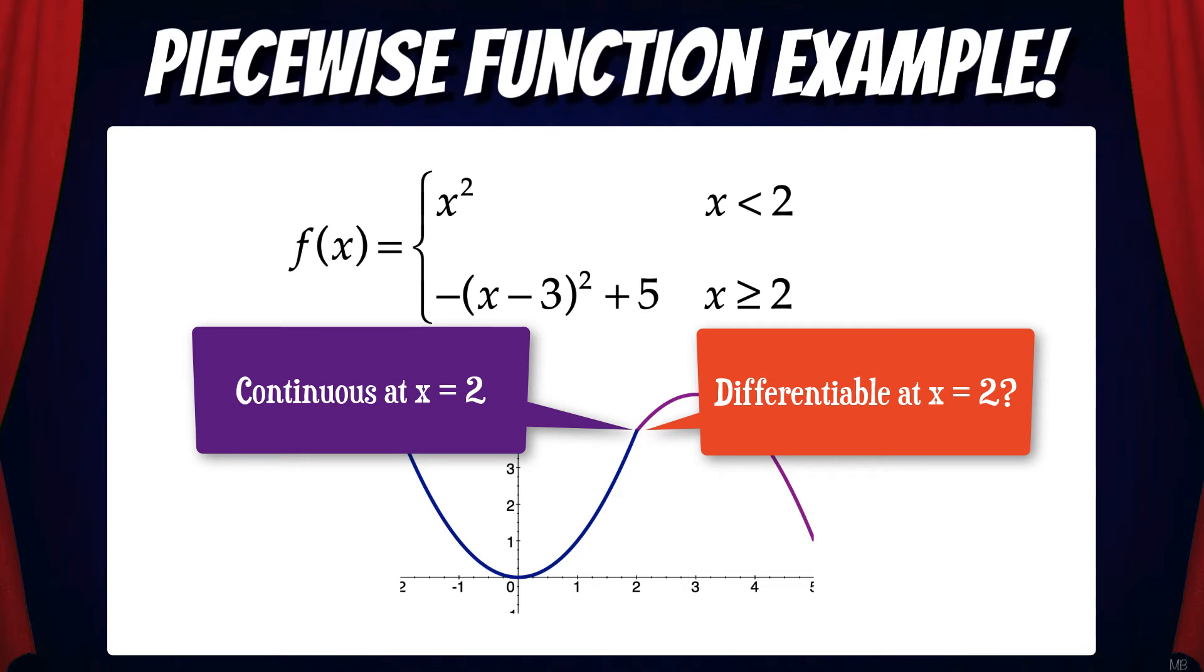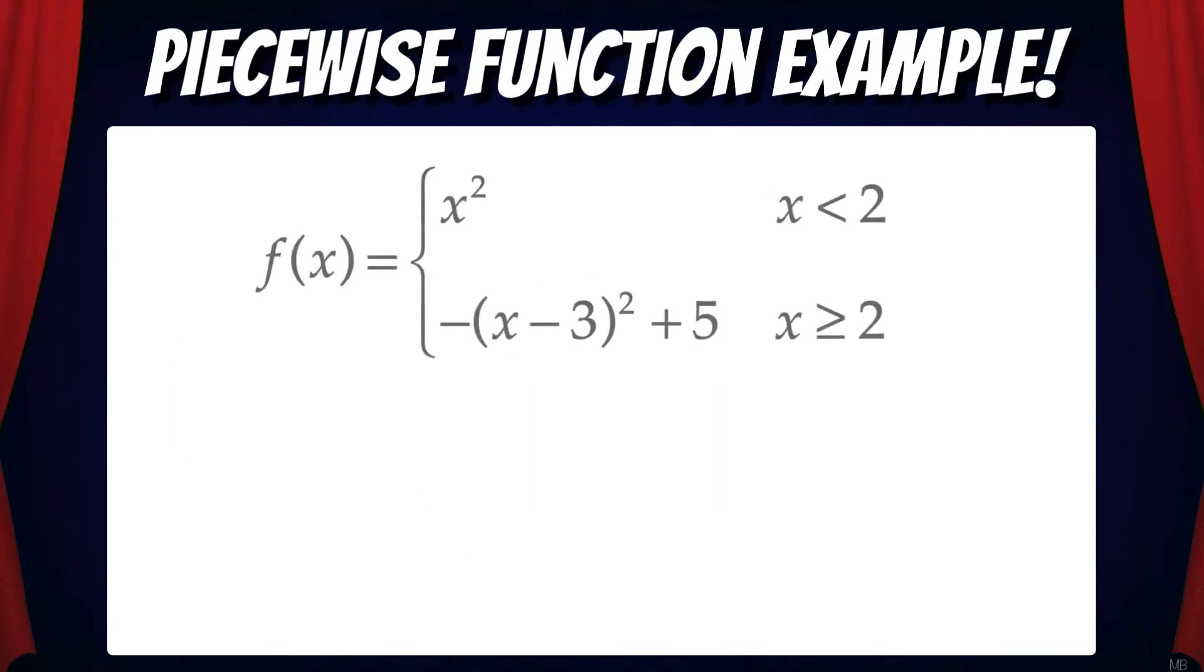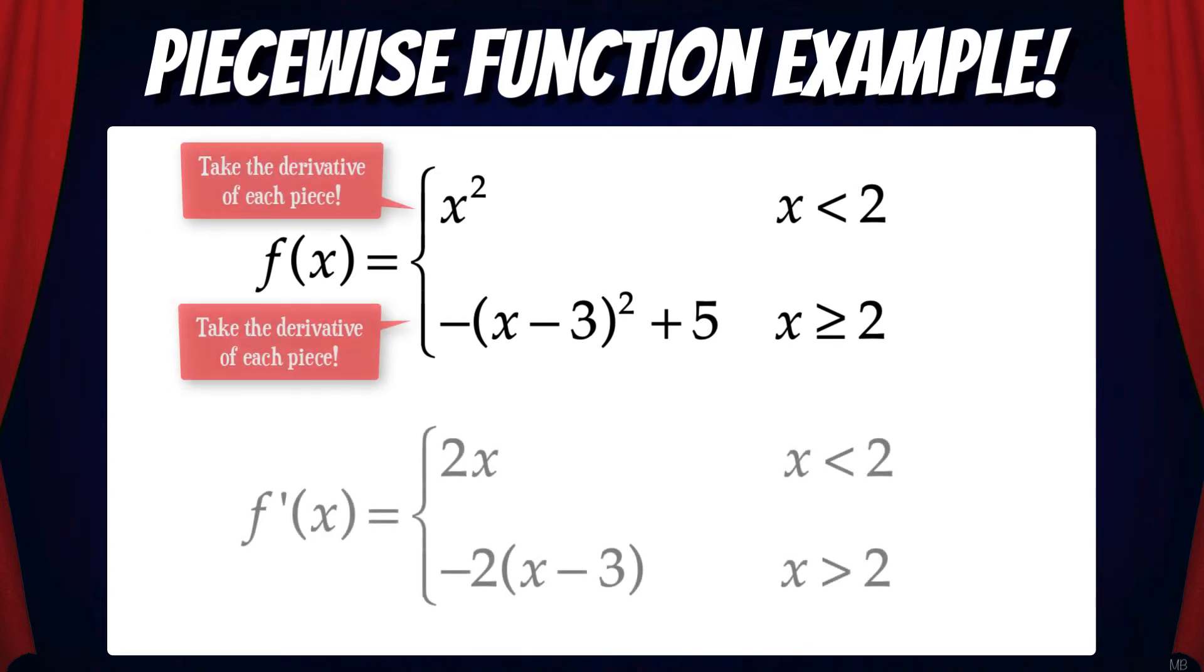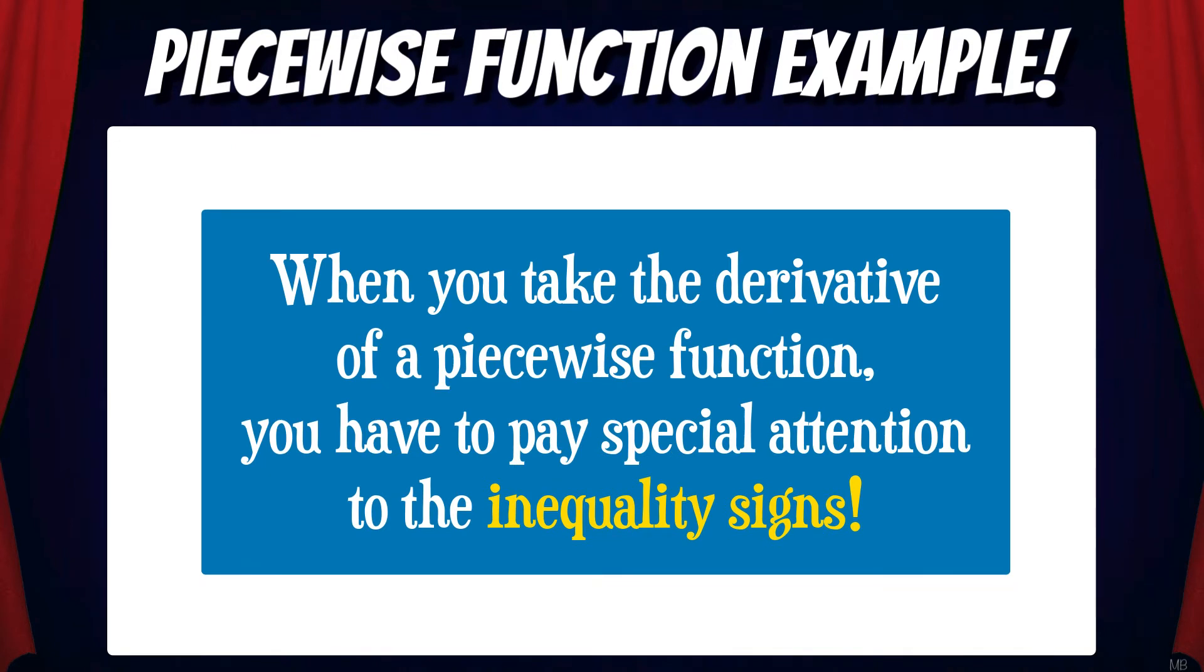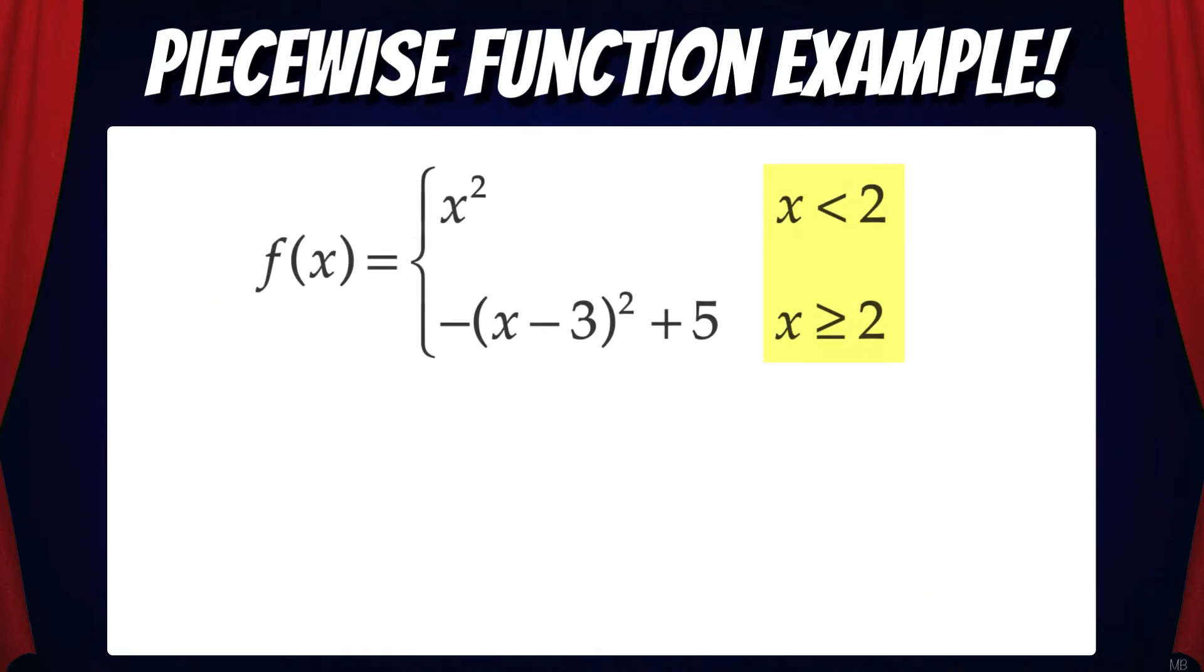The first thing we'll do is take the derivative of this function. Since this function is made up of two functions, we need to take the derivative of each piece separately. Note that when you take the derivative of a piecewise function, you have to pay special attention to the inequality signs. In the original function, the conditions are x less than two for the first piece, and x greater than or equal to two for the second piece.